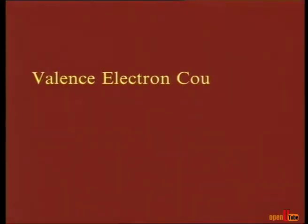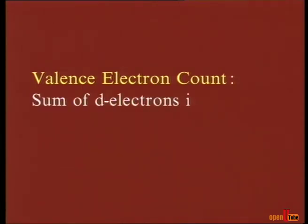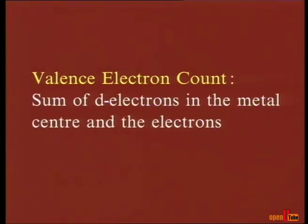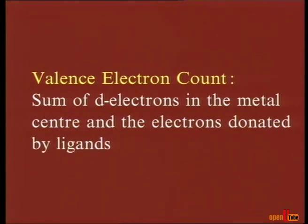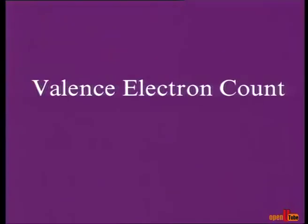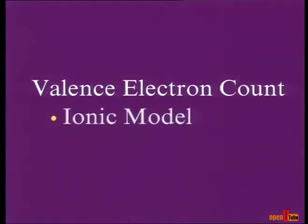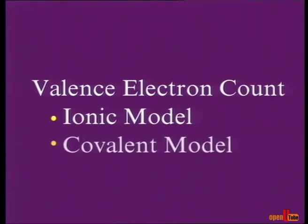Valence electron count is equal to the sum of d electrons in the metal center and the electrons donated by ligands. There are two models to calculate the valence electron count: they are ionic model and covalent model.